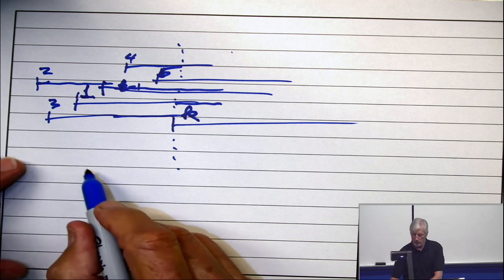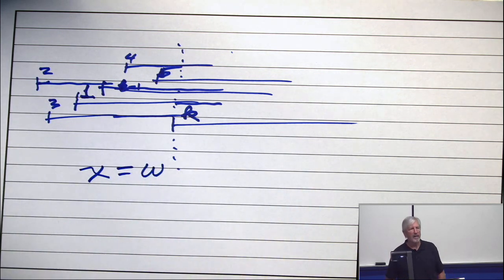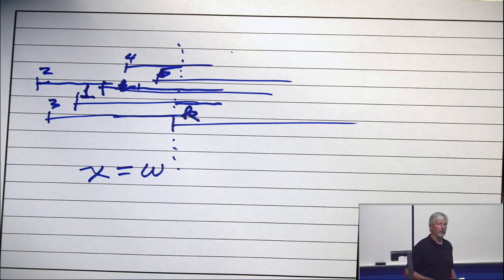So chi equals omega for any family of intervals. And the proof is just by using first fit on the order of the left endpoints.